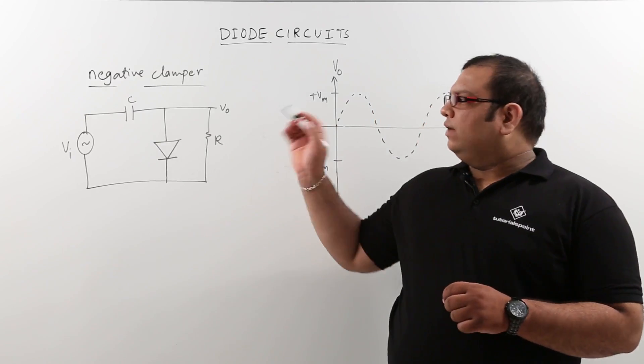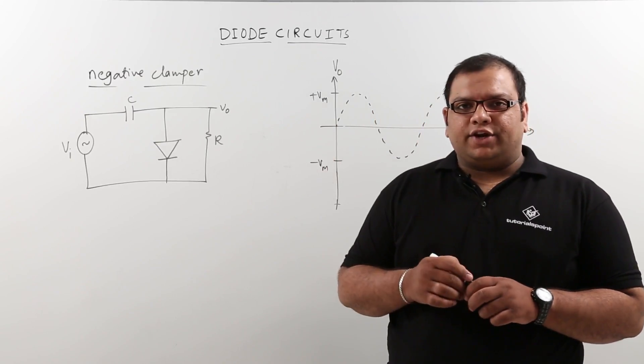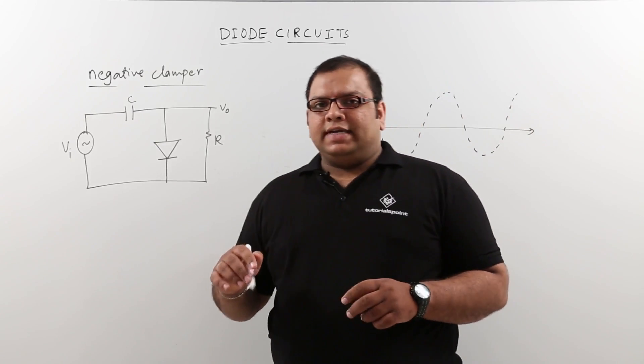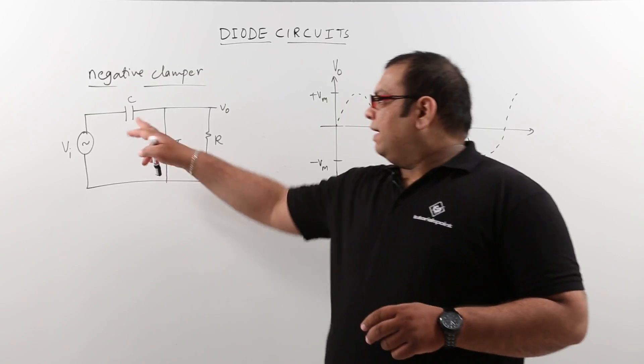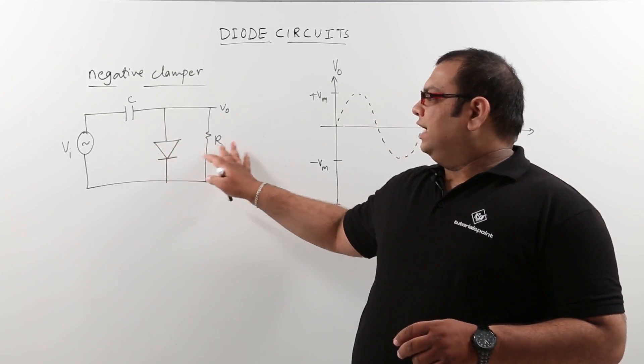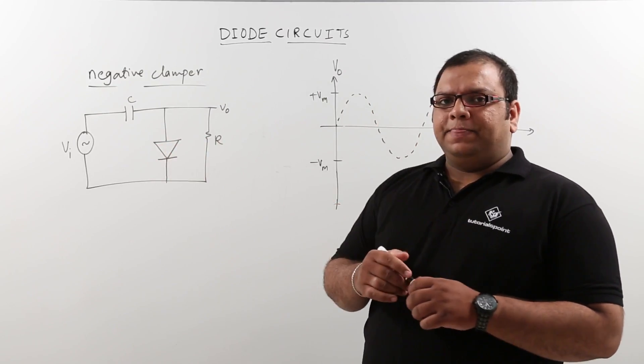Now let us discuss about the negative clamper in diode circuits. A negative clamper is a diode circuit which contains a capacitor, a diode, and a resistor.